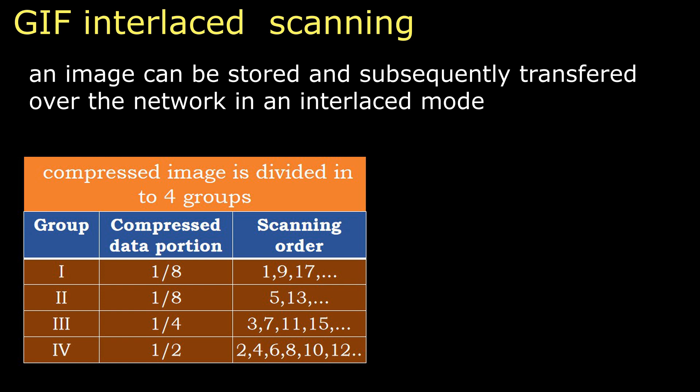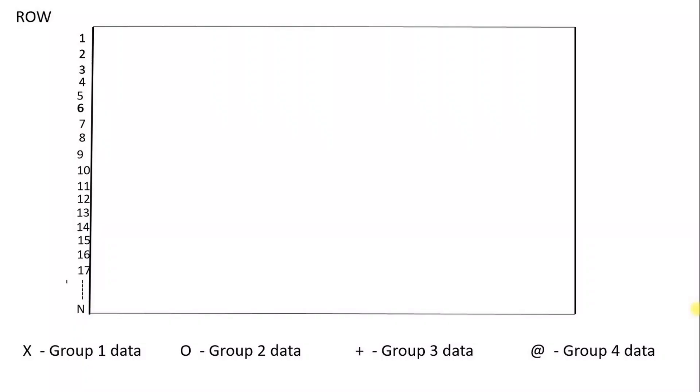In the next animation, I am going to show how these group 1, group 2, group 3, and group 4 data are generated in a GIF interlaced scanning. Let X indicate group 1 data, O indicate group 2 data, plus indicate group 3 data, and the at sign indicate group 4 data.